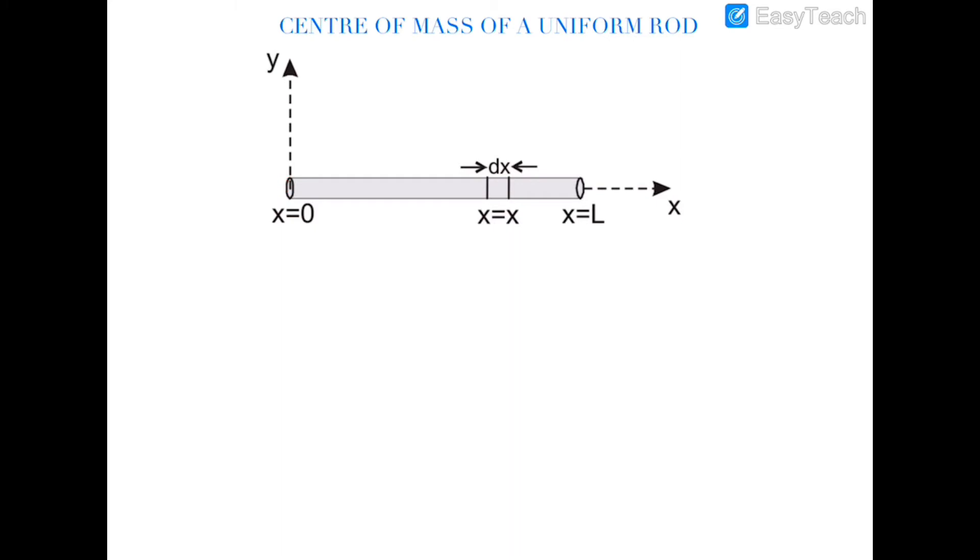So we can say that this rod is unidimensional and it is only in the x-axis. Now to find out the coordinates of center of mass of the rod, and as we all know that the mass of this rod is uniformly distributed...